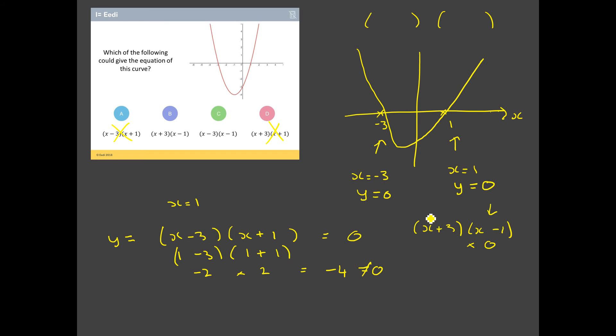Likewise, what happens when I substitute x equals minus three into this bracket? Again, I get minus three plus three, which is going to give me zero. Couldn't care less what's in this bracket because as soon as I get a zero multiplied by something, my answer is going to be zero. So the only pair of brackets that can work is that.